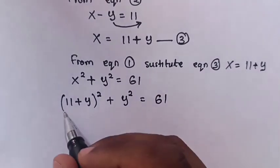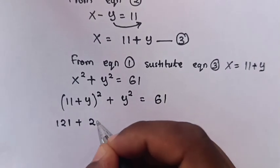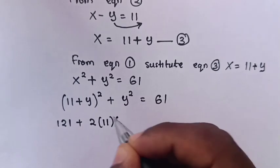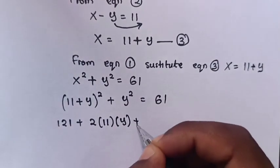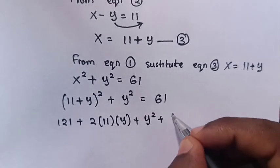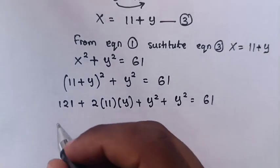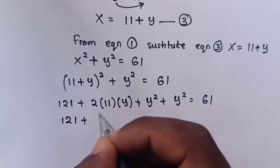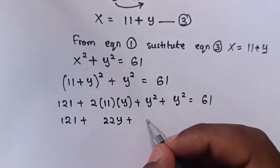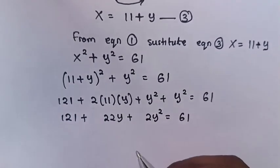Then, expanding the square inside the bracket: 11 squared is 121, plus 2 times 11 times y, plus y squared, plus y squared is equal to 61. So it will be 121 plus 22y plus 2y squared is equal to 61.